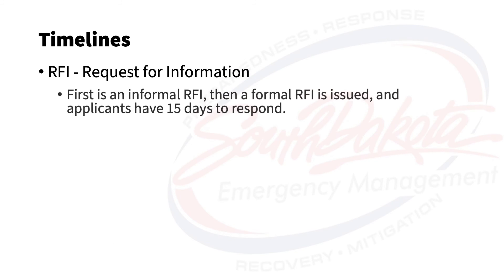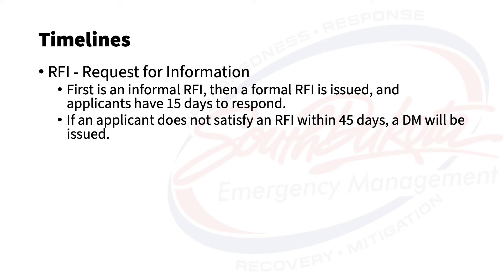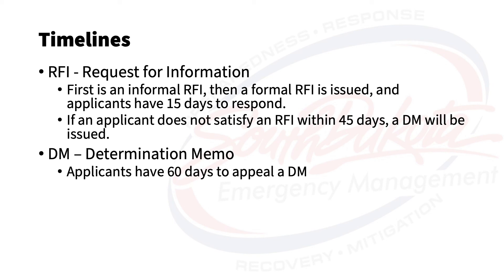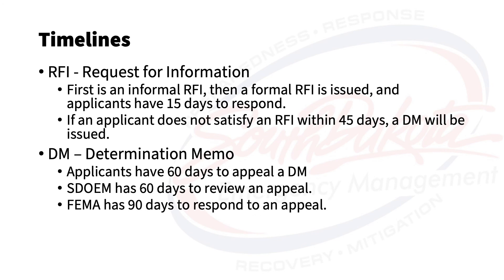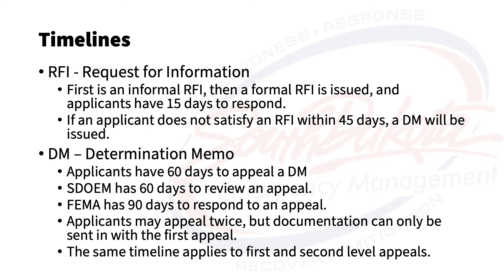To summarize: FEMA will send an informal request for information if applicants fail to respond to other inquiries. Failure to respond to an informal RFI will result in a formal RFI, and applicants will have 15 days to respond. If an applicant fails to respond to a formal RFI, after 45 days a determination memo will be issued. Applicants have 60 days to appeal a DM, SDOEM has 60 days to review an applicant's appeal, and FEMA has 90 days to respond. Applicants may only appeal twice, and supporting documentation may only be submitted with the first-level appeal. The same timeline applies to both first- and second-level appeals.